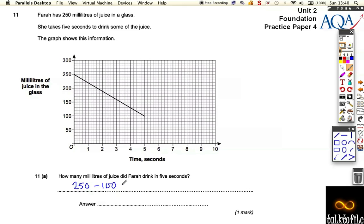So if you do 250, take away 100. She drank 150 millilitres for one mark, okay? Because it's gone down 50, 100, 150. That's how much she drank.